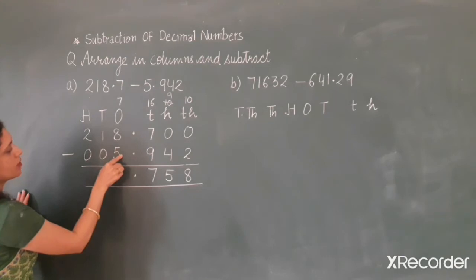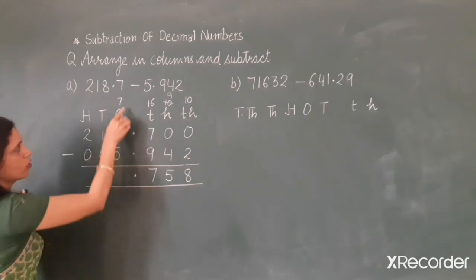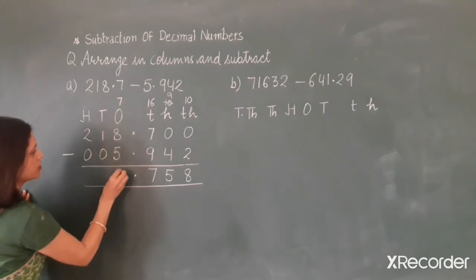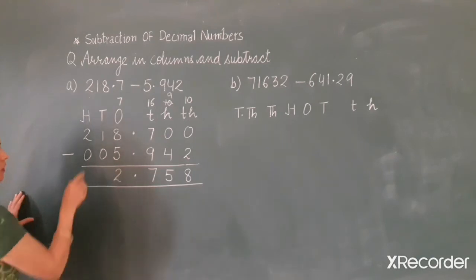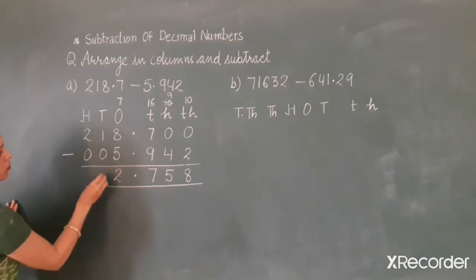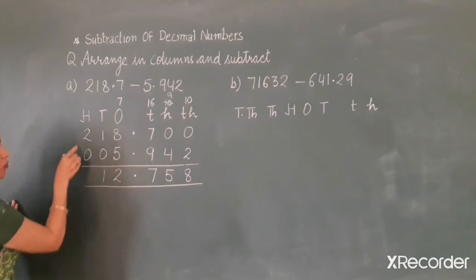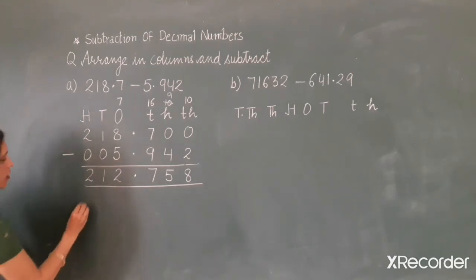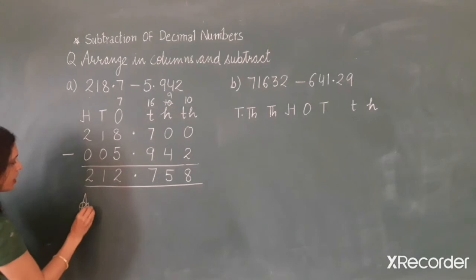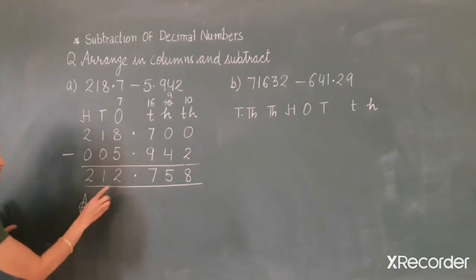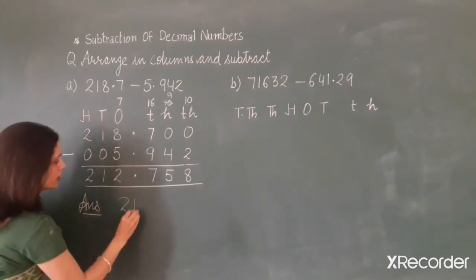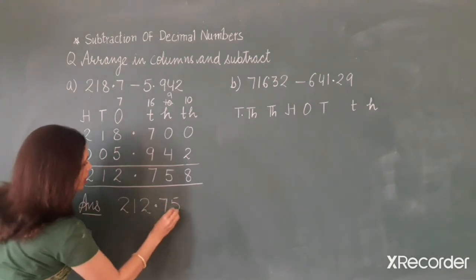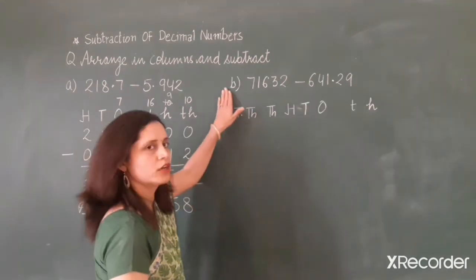Now subtract digit 5 from 7: 7 minus 5 is 2. Then 1 minus 0 is 1, and 2 minus 0 is 2. So after subtraction, we get the answer 212.758.